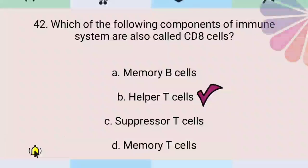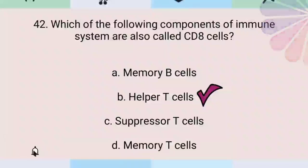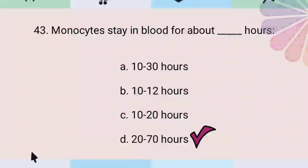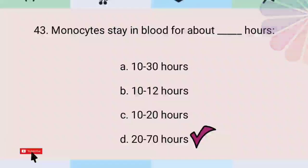Which of the following components of the immune system are also called CD8 cells? The correct answer is cytotoxic T cells. Monocytes stay in blood for about 20 to 70 hours.